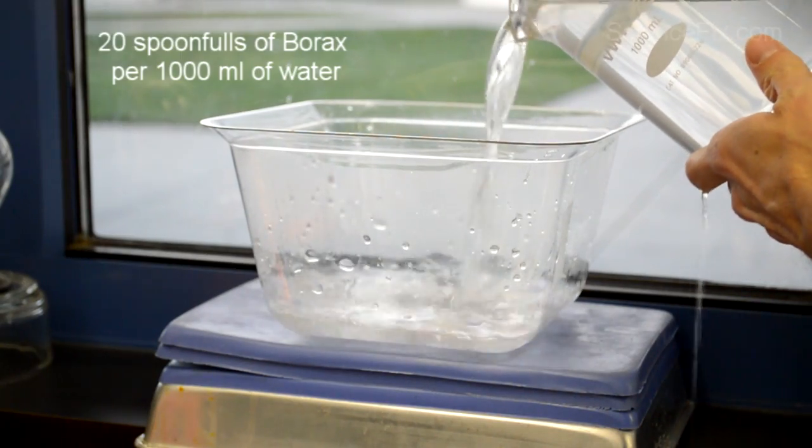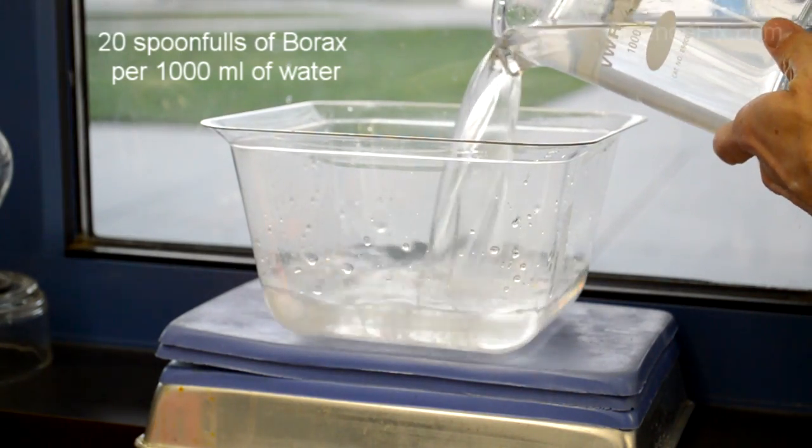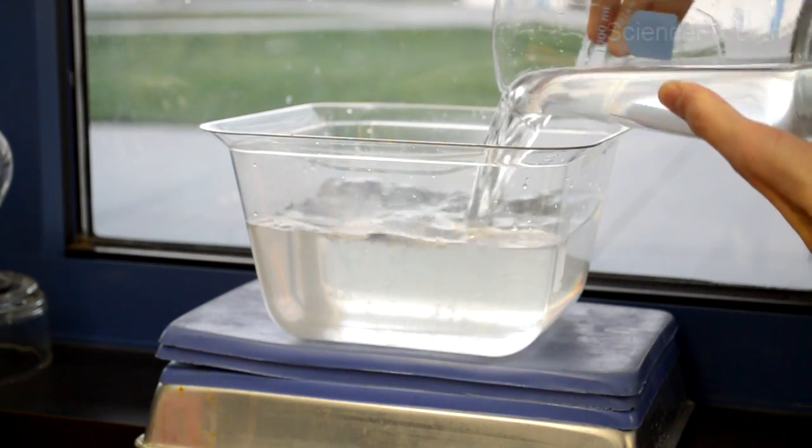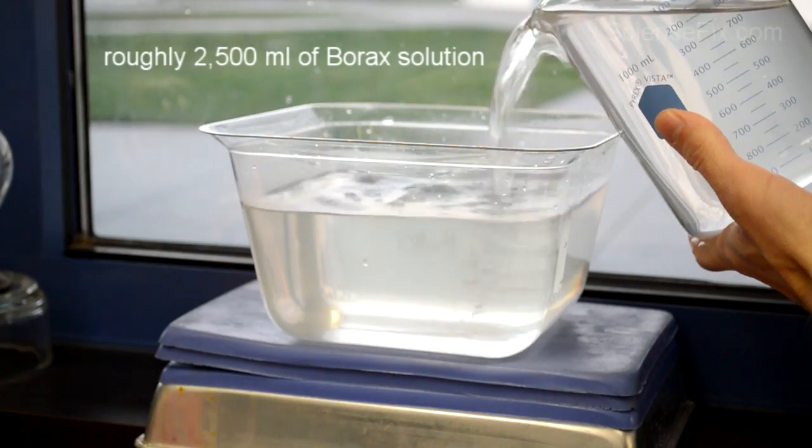Borax solution is being poured into the container. There are about 20 spoonfuls of borax per thousand milliliters of water for roughly a total of 2,500 milliliters of borax solution.